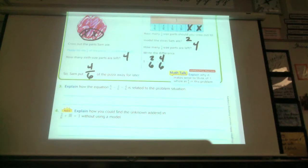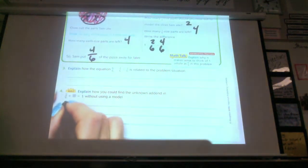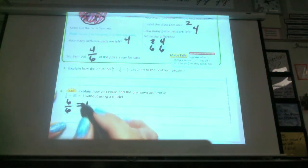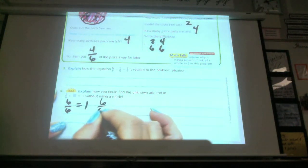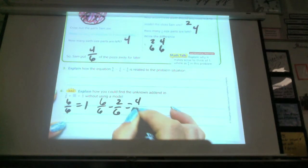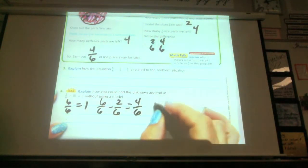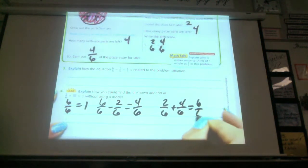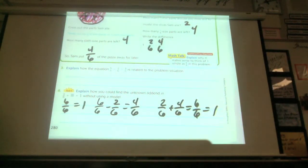Explain how you can find the unknown addend in two-sixths without using a model. Two-sixths plus something equals one. How do you figure that out without using a model? Okay, wow, that was a great explanation. He said six-sixths is the same as one. And so six-sixths minus two-sixths equals four-sixths is what he said. So that means that two-sixths plus four-sixths equals six-sixths, which equals a whole. And that's how I explained it. That was a great explanation.